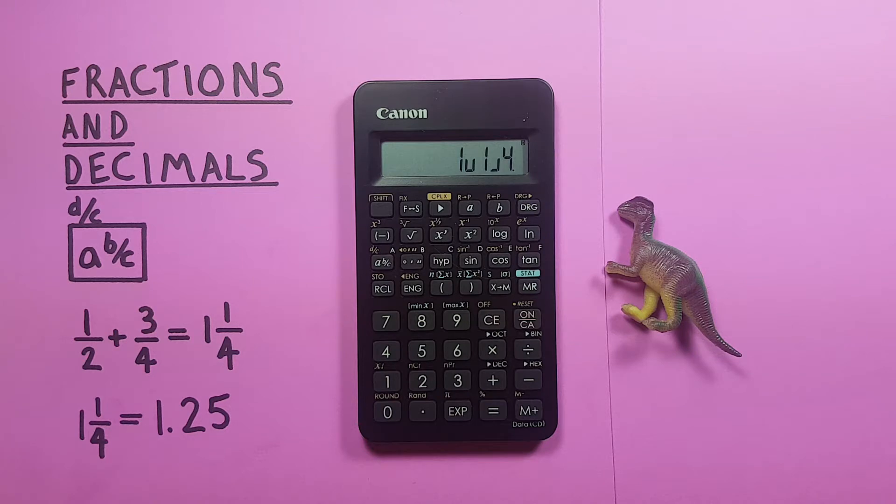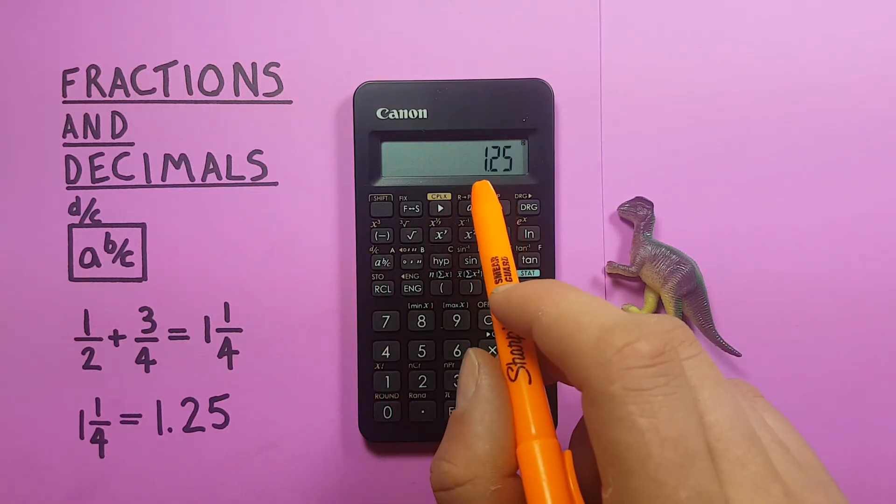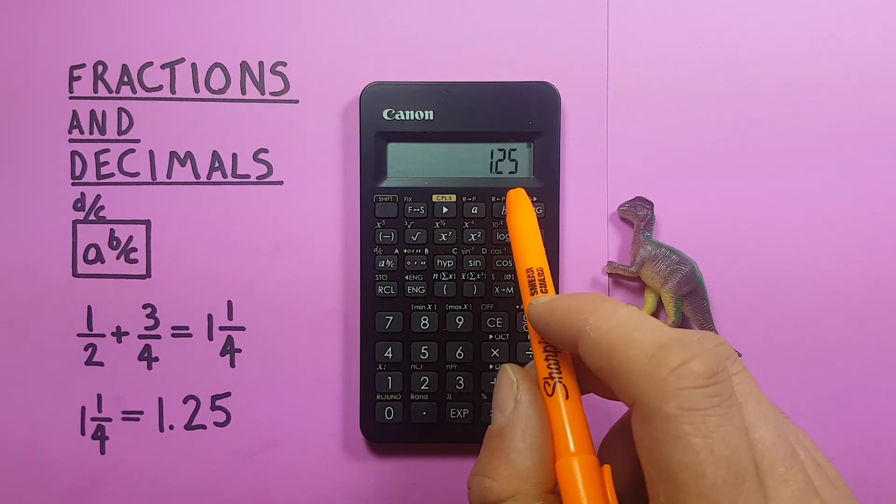We can also convert this to a decimal by pressing the a b over c key again, and getting 1.25 or 1 and 1 quarter.